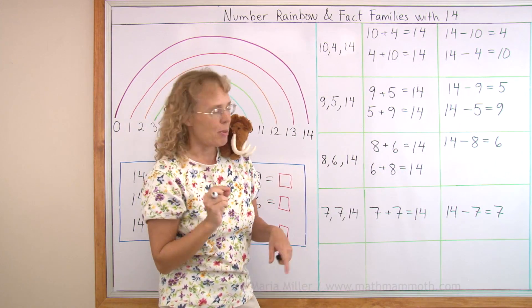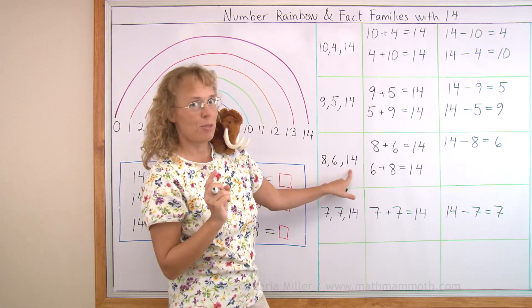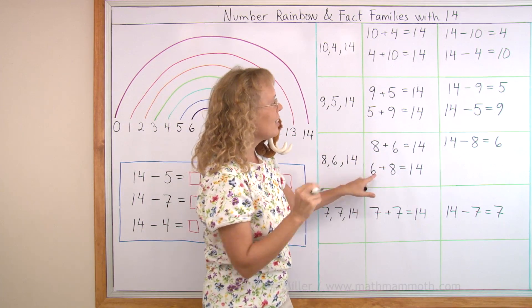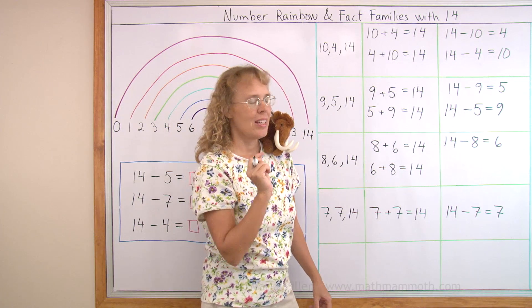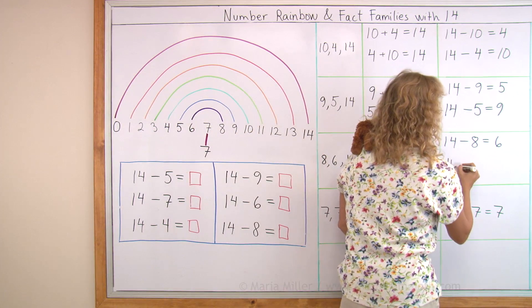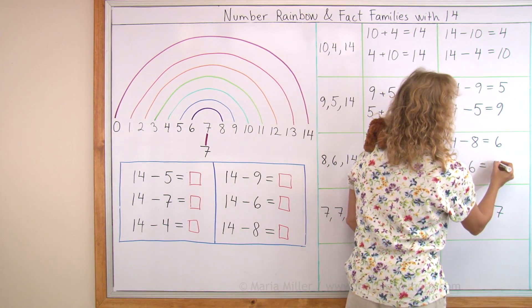The next fact family, 8 and 6 making up 14. My two additions are here. What subtraction is missing here? 14 minus 6 equals 8.